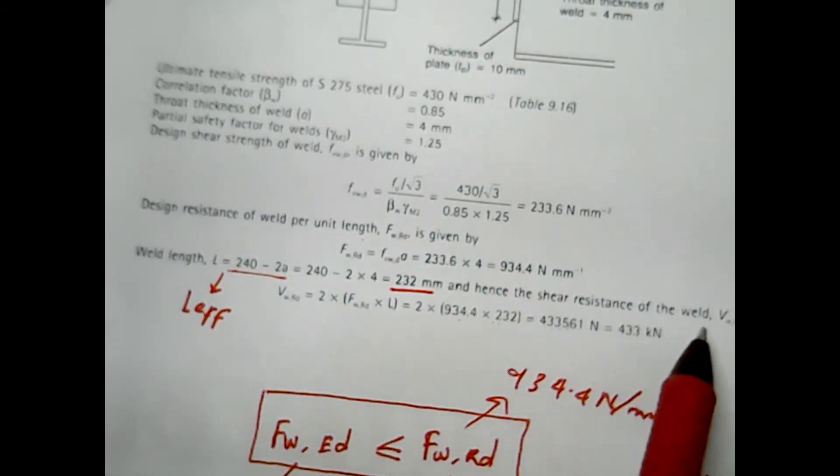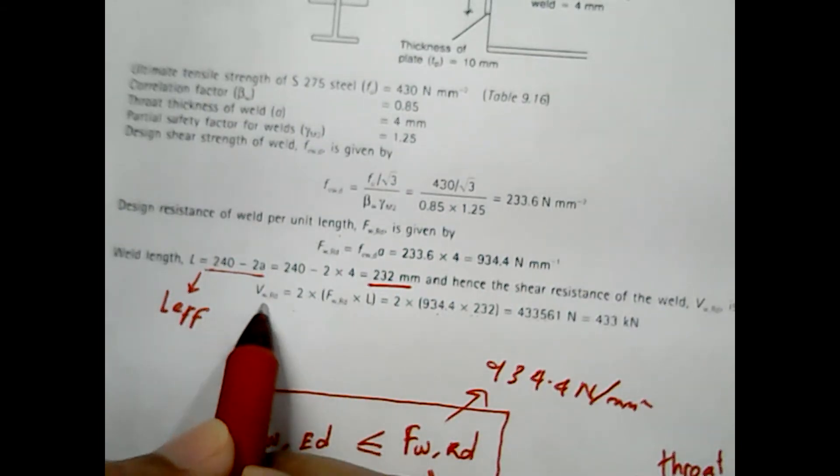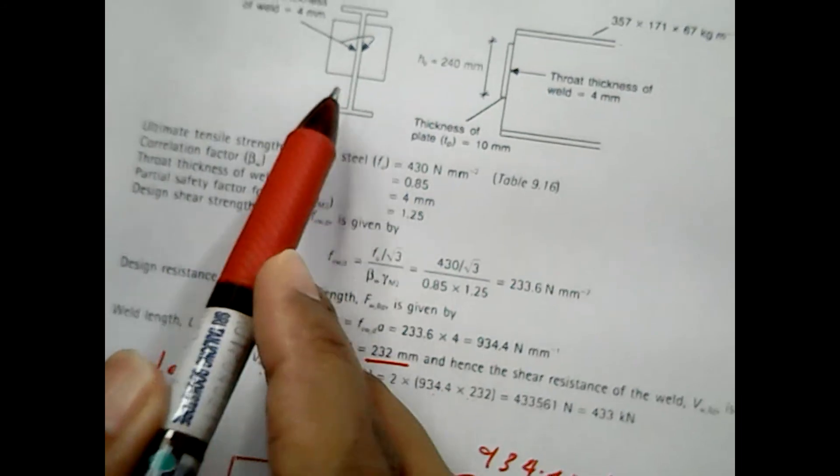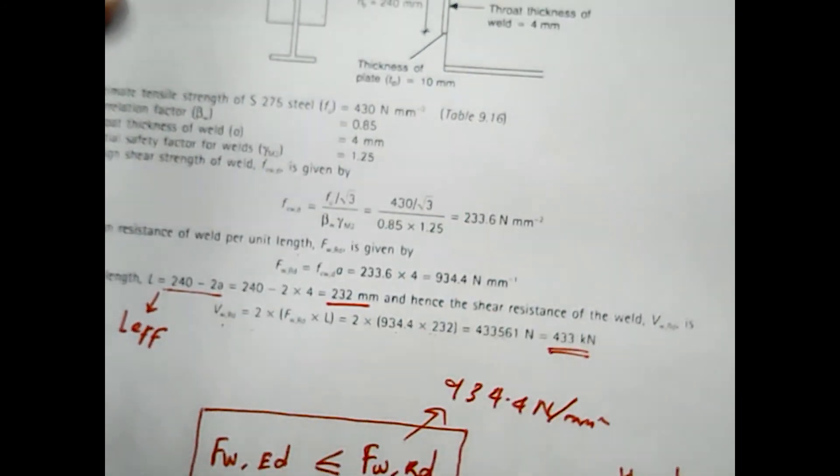So in this case your Vw,Rd is calculated, which is the shear resistance for this particular design, is 433 kilonewton.